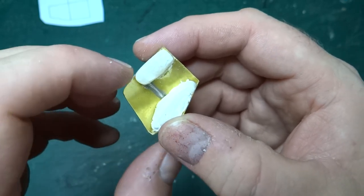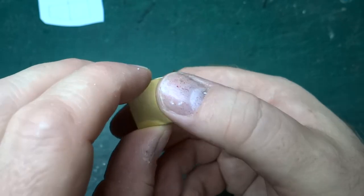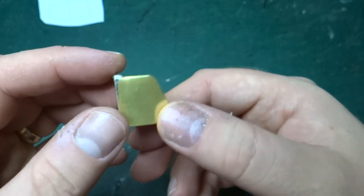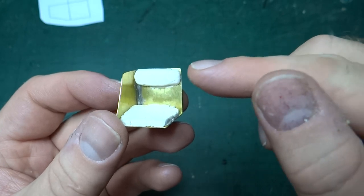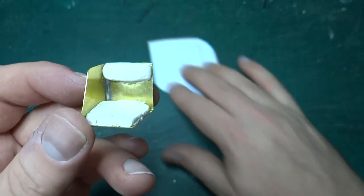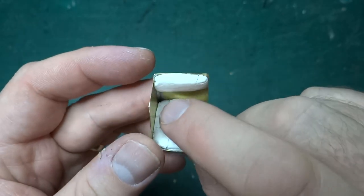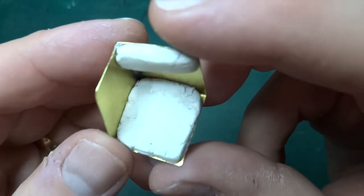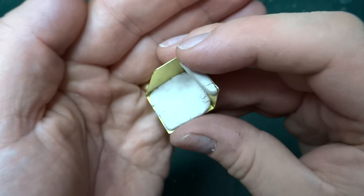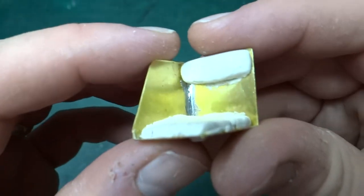I ran solder up the inside seam so this is nice and solid and then kind of polished that back. I've used a bit of DAS modeling clay to make the kind of rest for the back of the seat and a cushion.